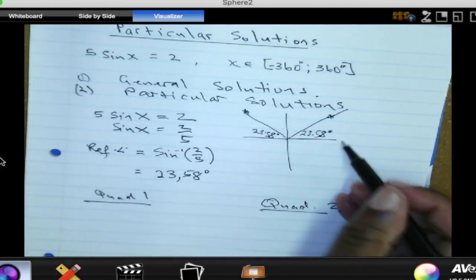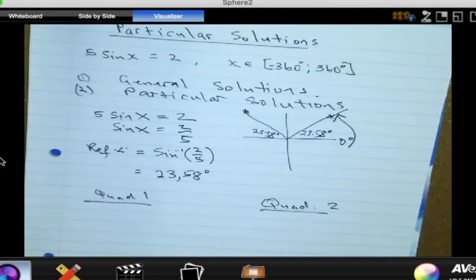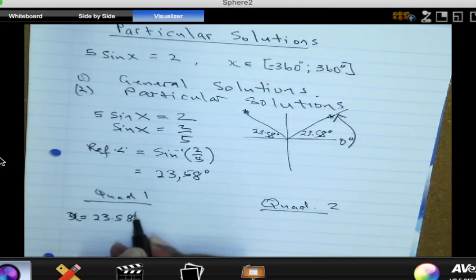So let's start from quad 1. We measure them from 0 degrees and all we need to do is measure up to there. How many degrees is that? 23.58. So that means X is equal to 23.58 degrees, but is that the only angle?